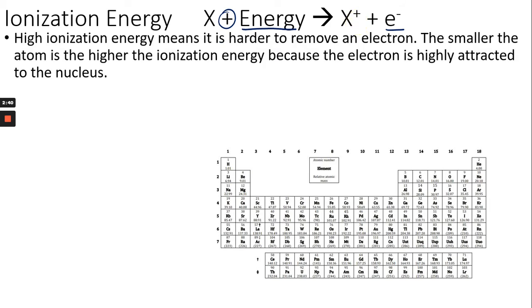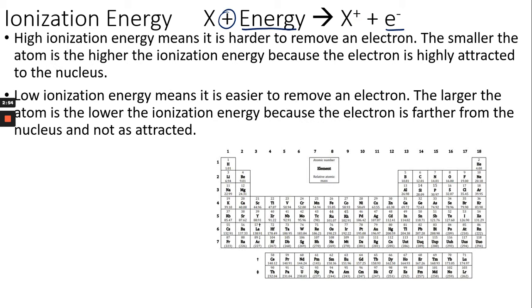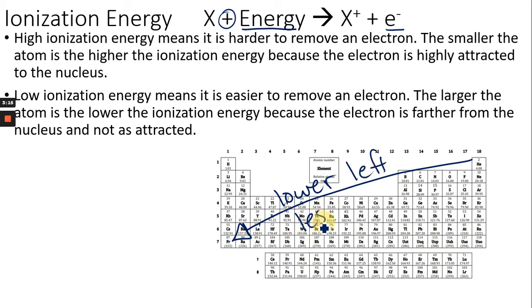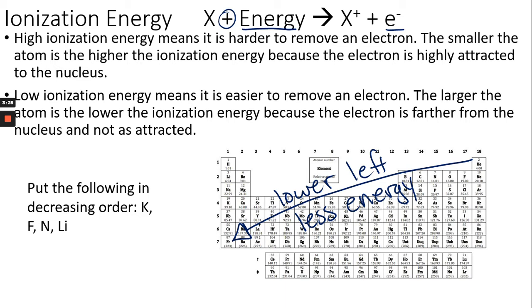High ionization energy means it's harder to remove an electron, and the smaller the atom is, the higher the ionization energy, because the electron is so attracted to the nucleus. Low ionization energy means it's easy to remove that electron — the larger the atom, the lower the ionization energy, because the electron is farther from the nucleus and that attraction isn't as great. Moving to the lower left on the periodic table means less energy needed. Francium, being the largest atom, requires the least amount of energy to lose its electron.